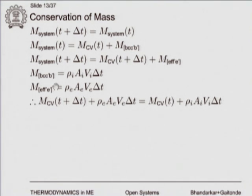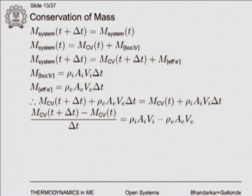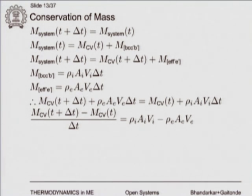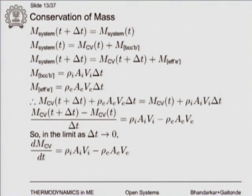Now we move to the first law. For a closed system: ΔE = Q − W, meaning if a closed system undergoes a process, the change in energy equals heat minus work interaction with surroundings. In our case, the system is the closed system described previously, undergoing a process during time ΔT.